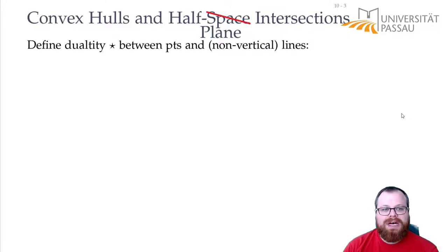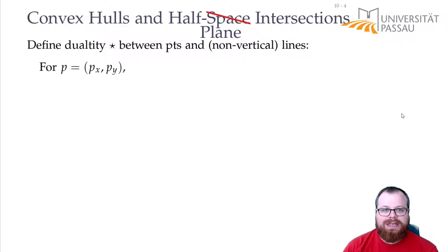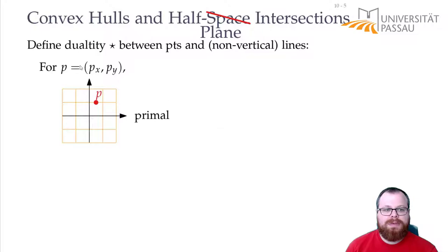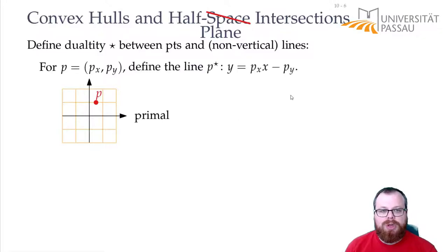We now want to define a type of duality between points and non-vertical lines. Let's say we have a point P with x-coordinate Px and y-coordinate Py. This is our primal. For all these points, we want to define a dual line, where the slope is Px and the intersection with the y-axis is at minus Py.